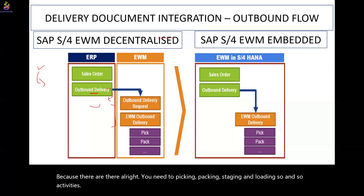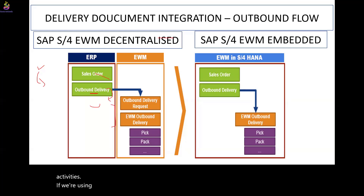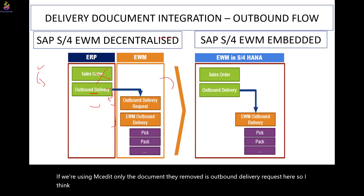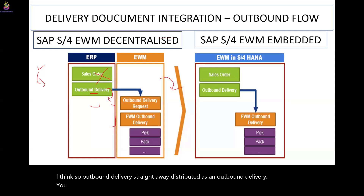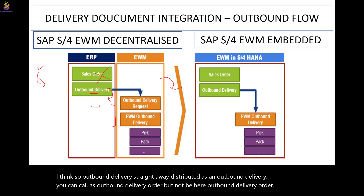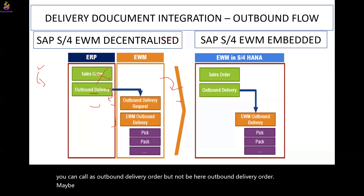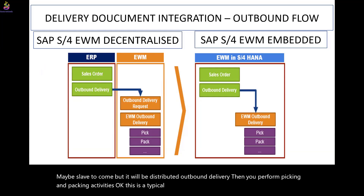If you are using the embedded scenario, the document they removed is the outbound delivery request. So the outbound delivery is distributed straight away as an outbound delivery — you can call it an outbound delivery order — and then you perform picking and packing activities. This is the typical inbound and outbound document flow.